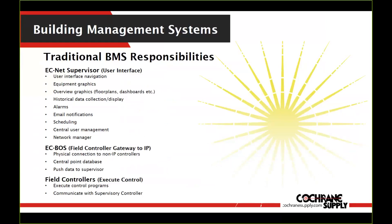The responsibilities are divided amongst those pieces of equipment. The supervisor does your user interface, navigation, graphics, overview graphics, historical data collection and display, alarms, emailing, scheduling, and all user management. It manages the network devices, those ECBOSSes, and has the central database and data model of your system. The ECBOSSes below are the gateway to your server — they have a replica of the point database for whatever field controller system they're monitoring, and they push the data up to the supervisor. Field controllers just execute the control of the system, not doing any UI or network management.